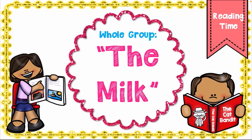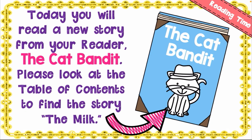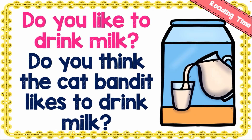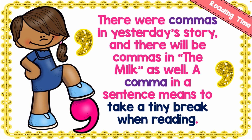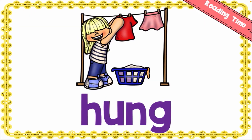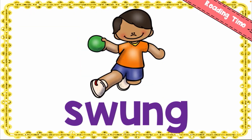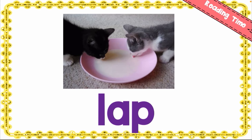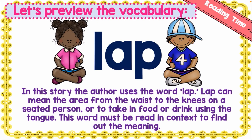Now let's read the story 'The Milk' from our reader. Do you like to drink milk? Well, I love drinking milk. There are commas in this story — a comma in a sentence means to take a tiny break when reading. Let's preview the vocabulary: we have 'shared,' 'hung,' 'swung,' and 'lap.'